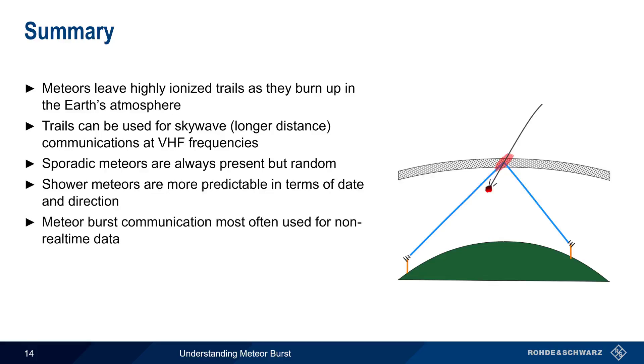Meteor burst is primarily used for transmitting non-real-time data, and most commercial or government-slash-military applications of meteor burst are based on sporadic meteors. Because meteor burst trails only last a very short period of time, communications must be short and or spread across multiple transmissions. This concludes our presentation, Understanding Meteor Bursts. If you would like to learn more about other propagation modes, or about Rohde & Schwarz's solutions for radio communications, please see the links in the video description. Thanks for watching.